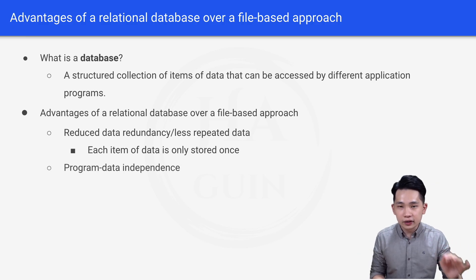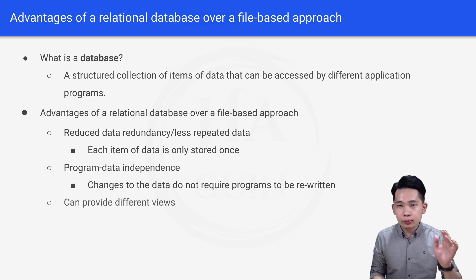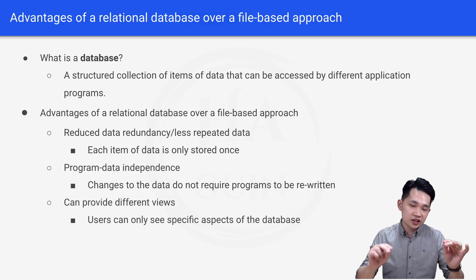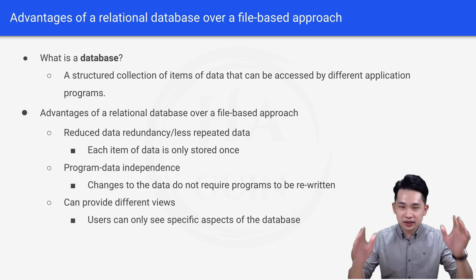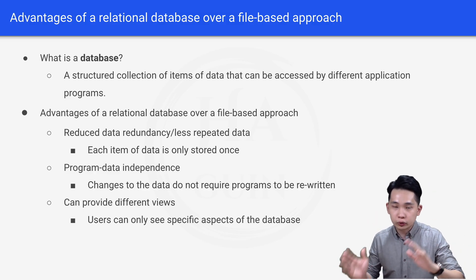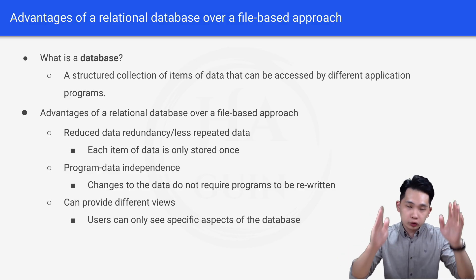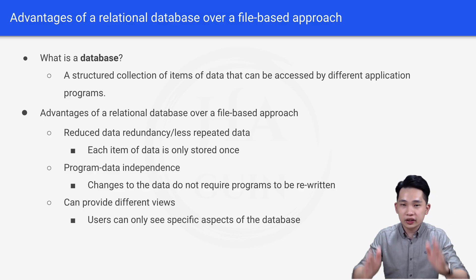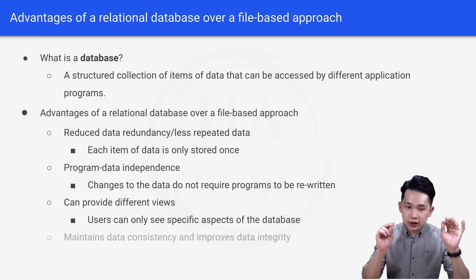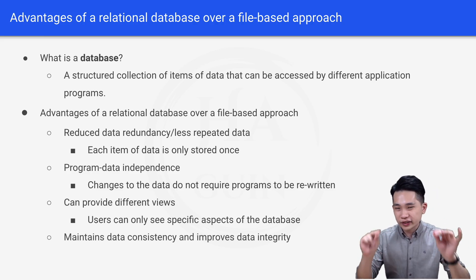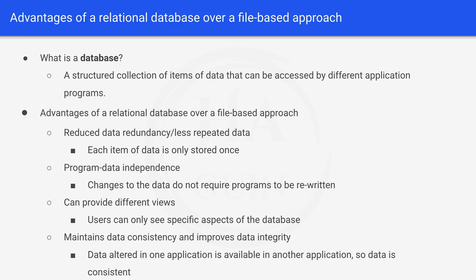Next is program data independence, which means changes to the data do not require programs to be rewritten. We can also provide different views so a user can only see specific aspects of the database. For example, if a customer table has five columns and two contain sensitive information, you can create a view with only the three non-sensitive columns so programs can access customer information without seeing the sensitive data. Lastly, it also maintains data consistency and improves data integrity, because data updated in one application is available in another.